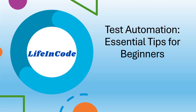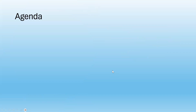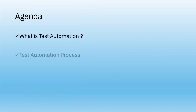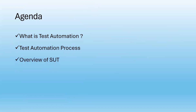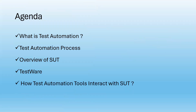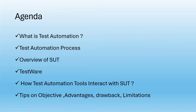Let's start with the agenda. These are the topics I'm going to talk about today: what is test automation, the test automation process, what is system under test, what are the testwares, how a test automation tool interacts with the system under test, and tips on test automation objectives, advantages, drawbacks, and limitations.